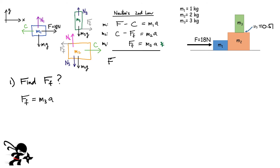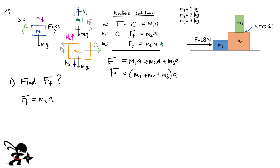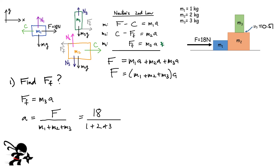Adding the three equations gives F on the left side, and M1A plus M2A plus M3A on the right. We can factor out A because all blocks have the same acceleration, giving F equals the total mass times A. So the acceleration is simply F over total mass: 18 Newtons divided by (1 + 2 + 3) kilograms equals 18 over 6, giving an acceleration of 3 meters per second squared.